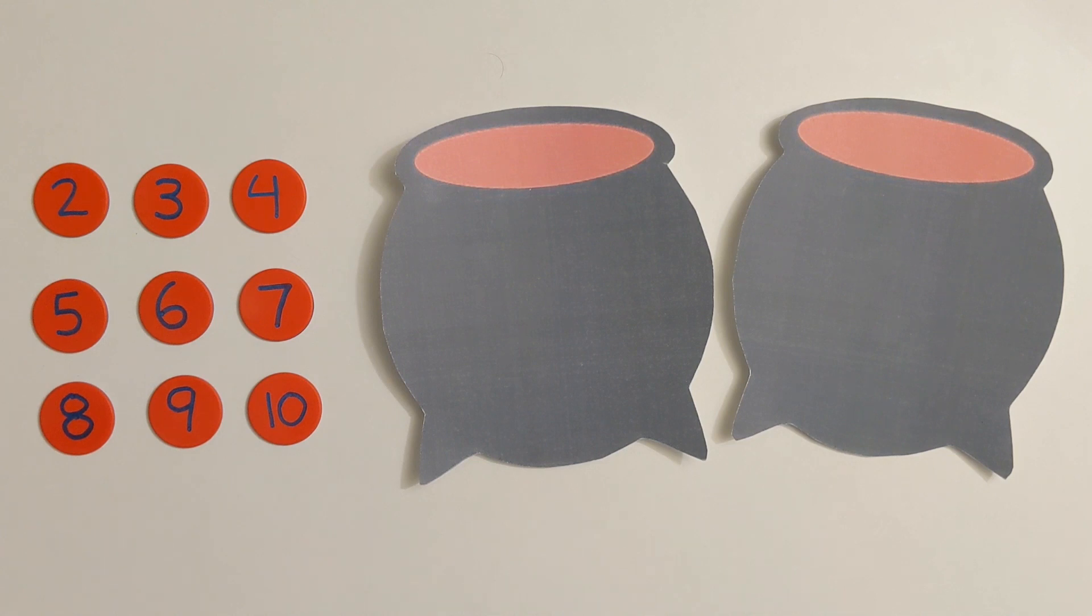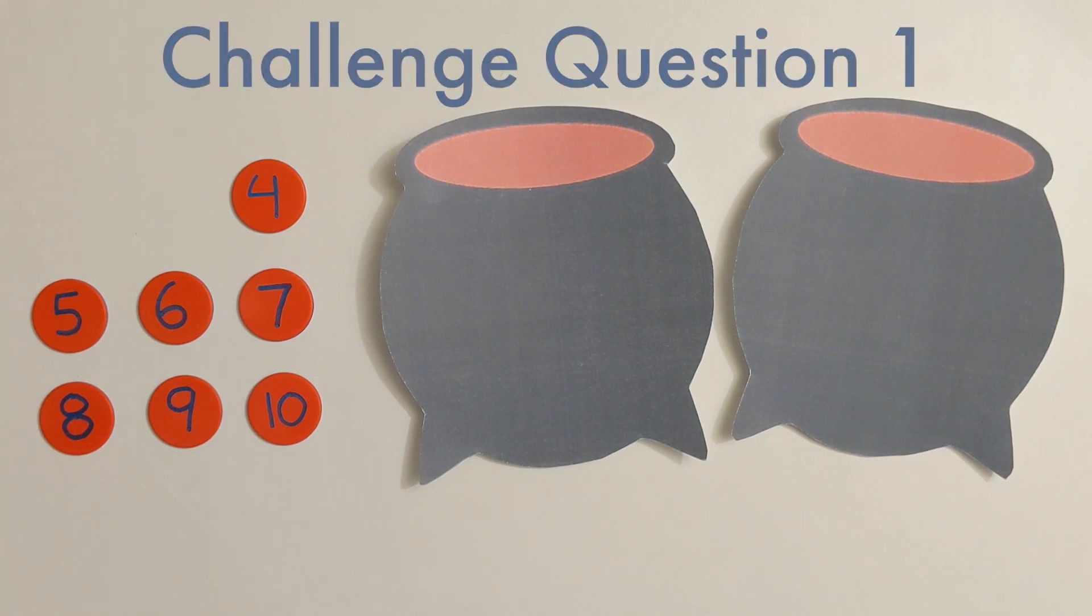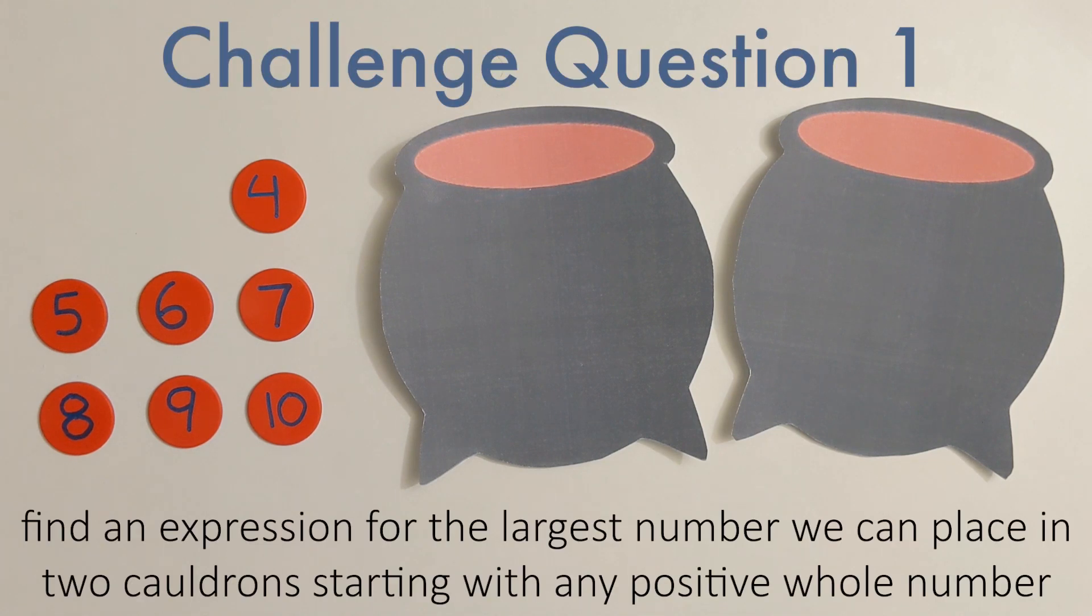Once we've figured out the largest number we could place starting with the number 2, let's do it again, but this time starting with the number 3. Then, after we've solved that, let's do it again, starting with the number 4. And so on. The goal is, can we find a system, or mathematical expression, to figure out what's the largest number we could place, starting with any positive whole number?